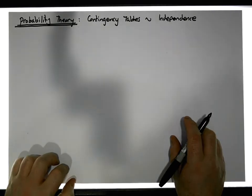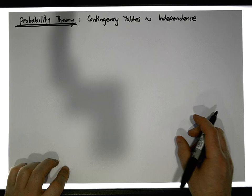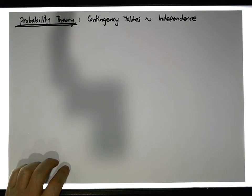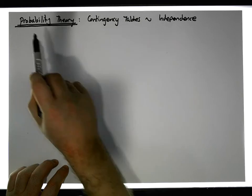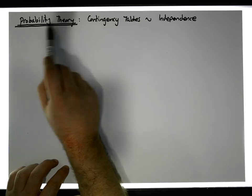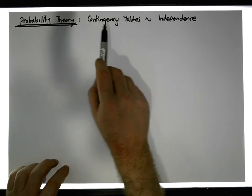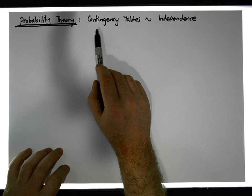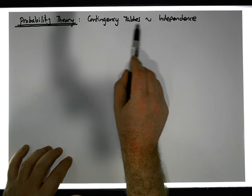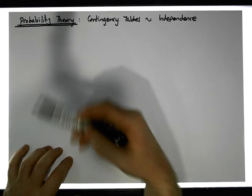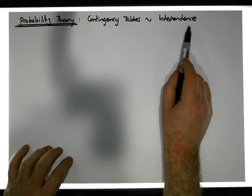Hi guys, this is Jonathan Lambert with the Mathematics Development and Support Service at the National College of Ireland. In this short video, we're going to consider another video in our series dealing with probability theory, and we're going to explore probability concepts through the use of contingency tables. This video concentrates on the concept of independence.